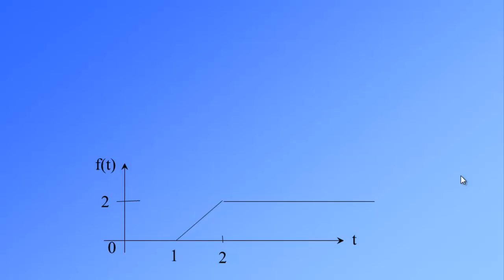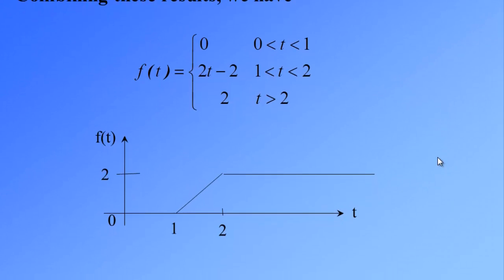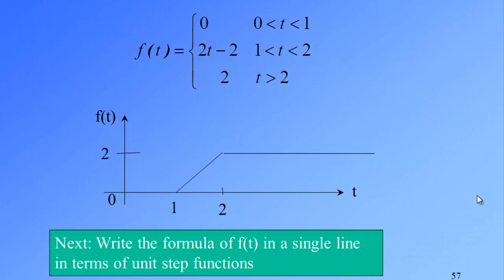So we can write down the equation of f(t) for this graph. It is: f(t) = 0 for t between 0 and 1, f(t) = 2t − 2 for t between 1 and 2, and f(t) = 2 for t greater than 2. Next, we are going to write the formula of f(t) in a single line in terms of unit step functions.